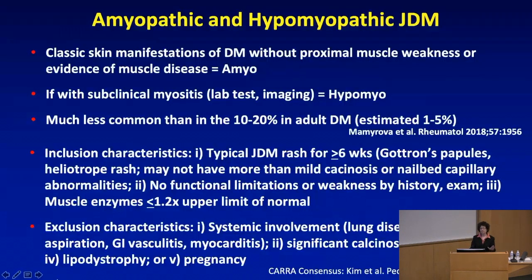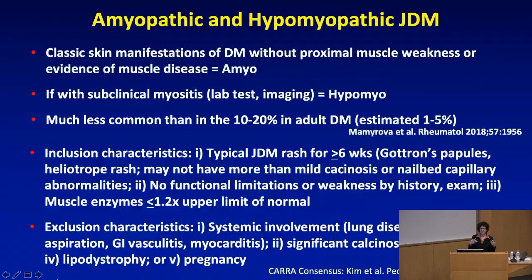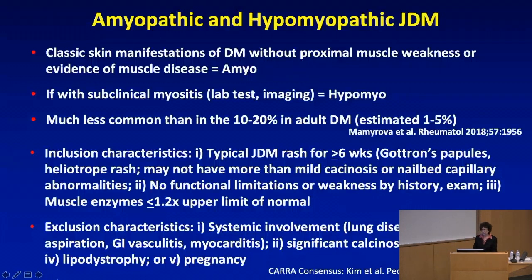I want to say a little about amyopathic and hypomyopathic JDM. This is still an area needing better understanding, particularly in pediatrics, though it has been well-promoted in adult dermatomyositis. It describes classic skin manifestations without the proximal muscle weakness or evidence of muscle disease — that's amyopathic. Hypomyopathic has been defined as having some subclinical myositis on imaging or lab test, but not any evidence of weakness or muscle disease otherwise.